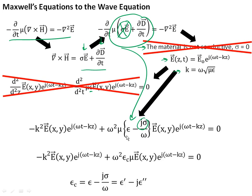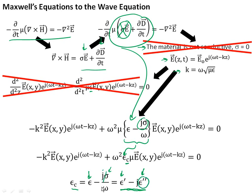We simply treat the permittivity epsilon as a complex number, calling it epsilon sub c. Instead of being a real number, epsilon becomes complex — not a problem at all, we can still get a solution. The complex permittivity is given by the real part, epsilon prime, plus an imaginary term j sigma over omega. We represent this as epsilon prime for the real part and epsilon double prime for the imaginary part, where epsilon double prime is essentially sigma over omega for a conductive material.